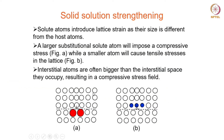In order to understand that, we need to first understand what happens when solute atoms — the alloying elements — are added to the parent lattice. What happens when some parent atoms are replaced by solute atoms? There are two scenarios: one, the solute atom is bigger than the parent atom, and second, it is smaller than the parent atom. In either case, it will induce a lattice strain because the size does not match, and it can induce either a compressive stress or a tensile stress.